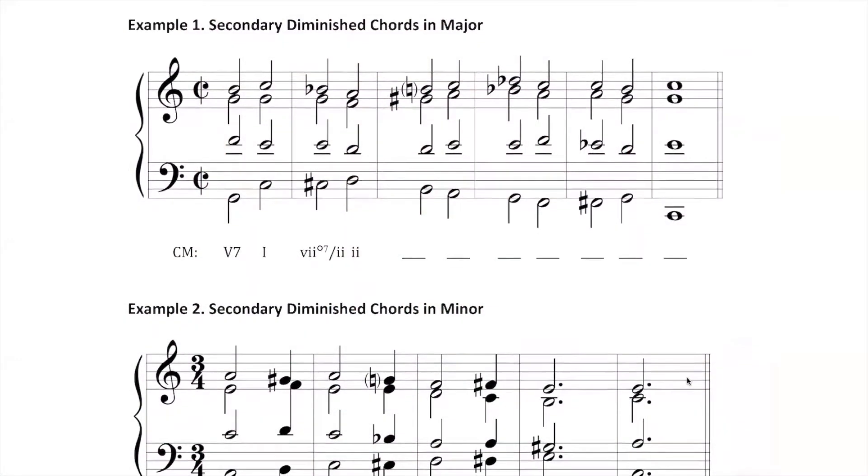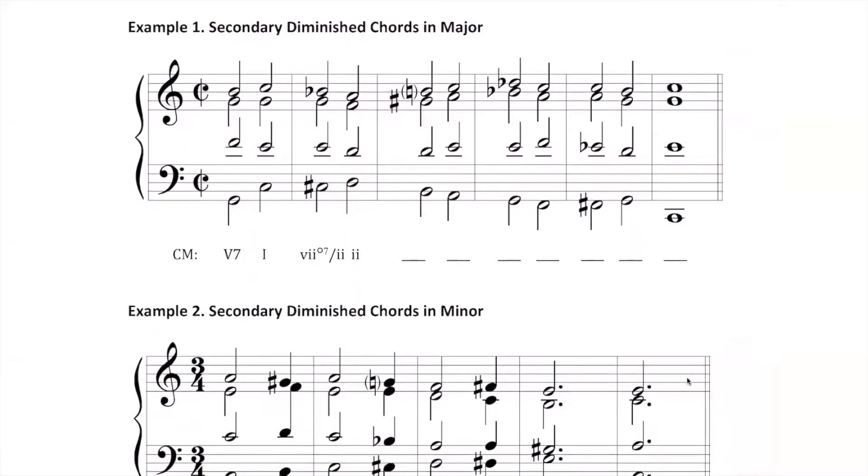So we can tonicize chords other than tonic using secondary leading tone chords, or secondary diminished chords, and that's our topic for today. We're going to take a look at the guide I wrote called 'Secondary Diminished Chords' and look at how these work in a couple of progressions. Take a look at Example 1 — here I have a progression with a lot of chromatic chords.